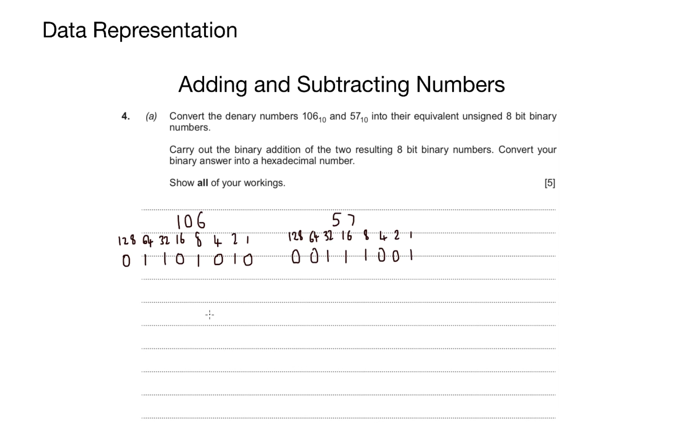So that gives me a full range of all of my numbers. Converting 106, give me 01101010. And that would get me 2 marks in my exam. I then stacked the numbers on top of each other, ready for my binary addition to be carried out.